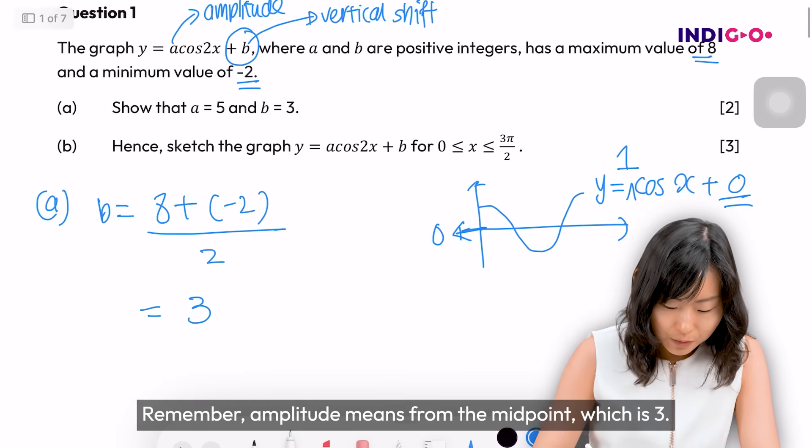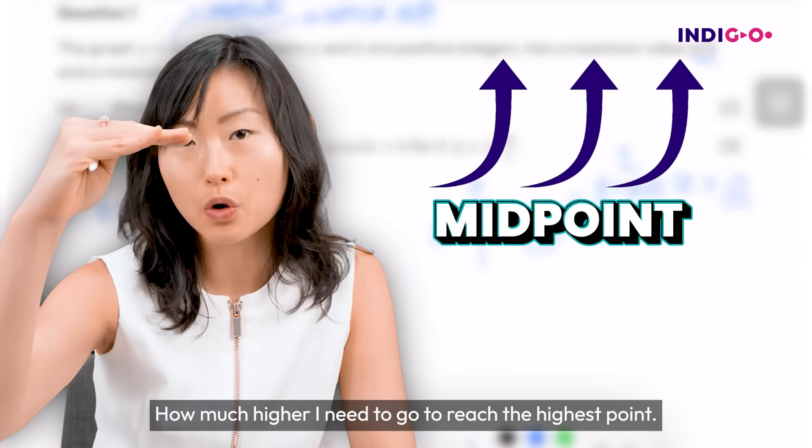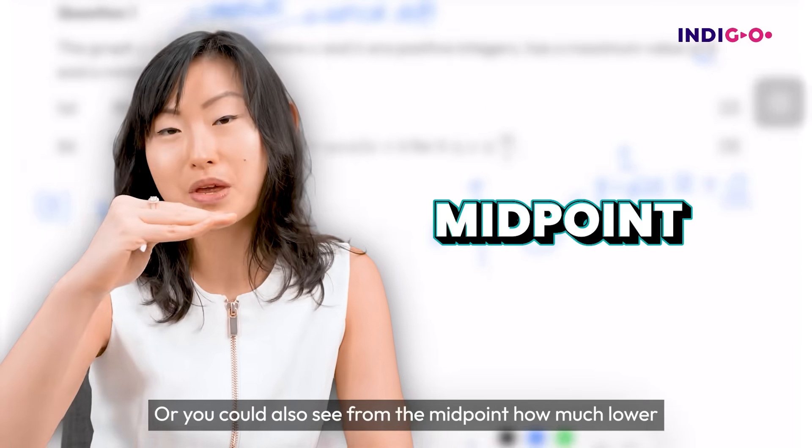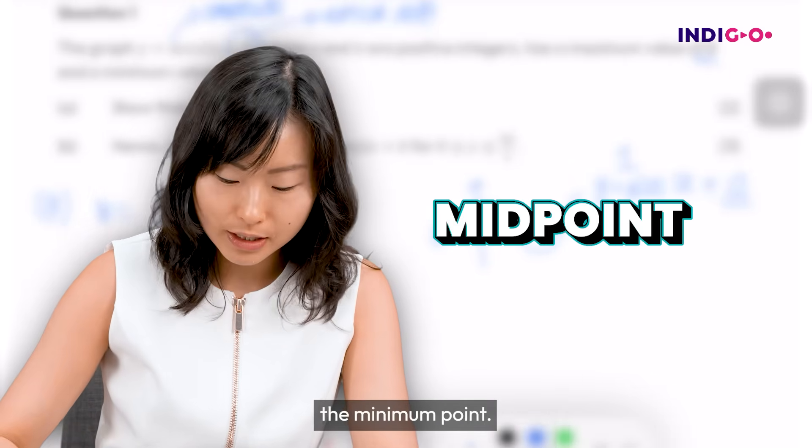Remember amplitude means from the midpoint, which is 3, how much higher I need to go to reach the highest point. Or you could also see from the midpoint, how much lower I need to go to reach the bottom point, the minimum point.